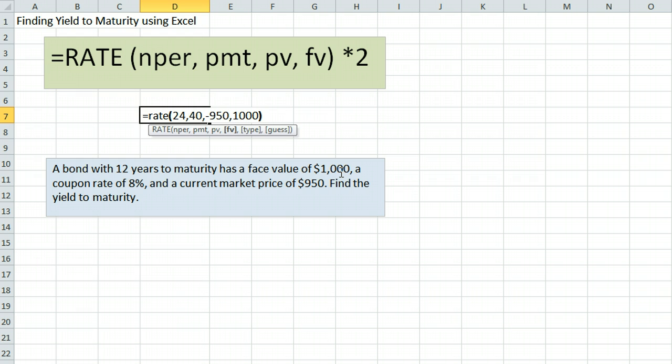Now since we have put everything in terms of semi-annual payments, Excel is going to give us a semi-annual interest rate, so we need to multiply that by 2 to get the annual yield to maturity. That gives us 8.68% as our yield to maturity, and as a quick check, this does make sense.